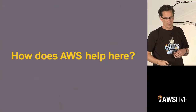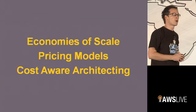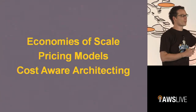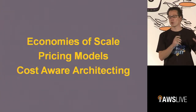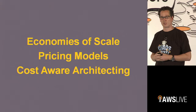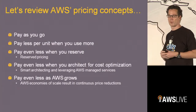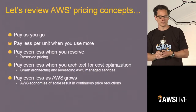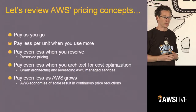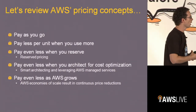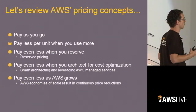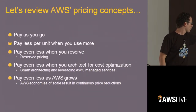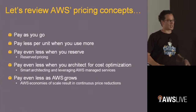So how does AWS help here? Obviously we spoke about economies of scale earlier on. Kingsley Wood talked about different pricing models. I'll go into cost-aware architecting, but before we do that, let's review some of these pricing things. You know that it's pay-as-you-go. You pay less when you use more, specifically with things like S3. Kingsley explained reserved instances and you pay less when you reserve. What we're going to talk about right now is pay even less when you architect for cost optimization.